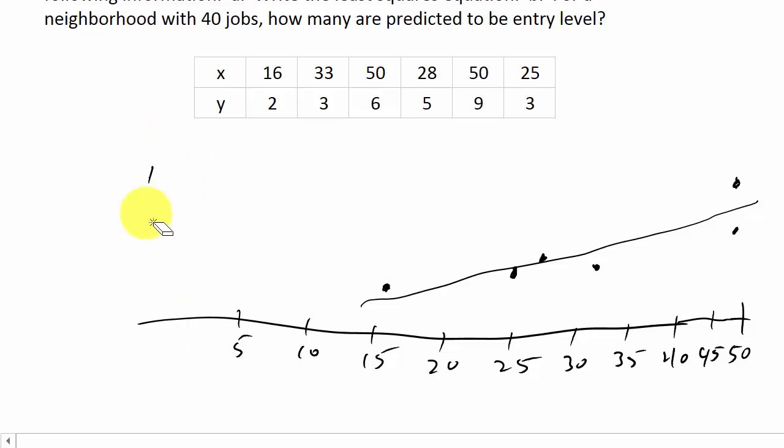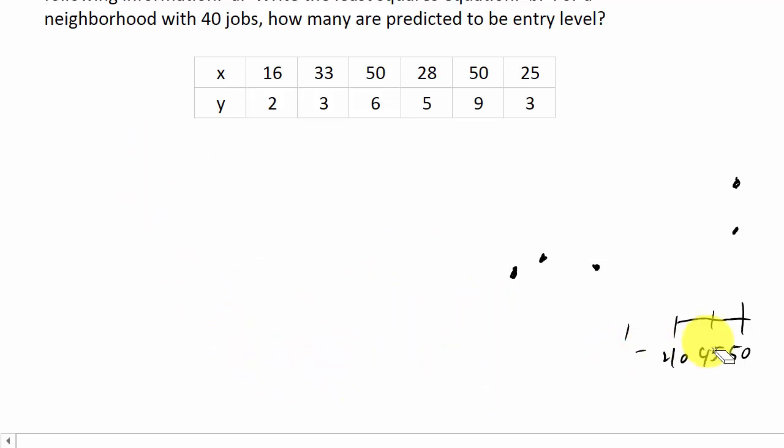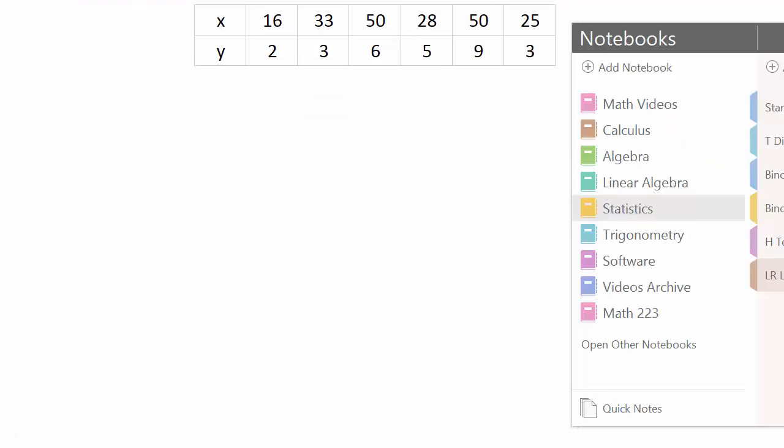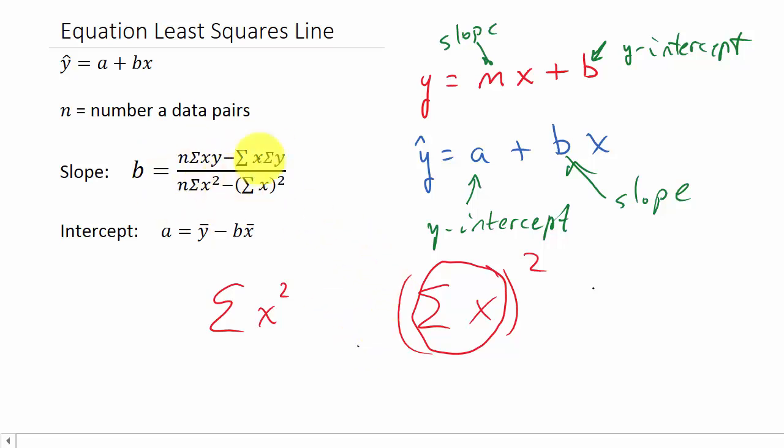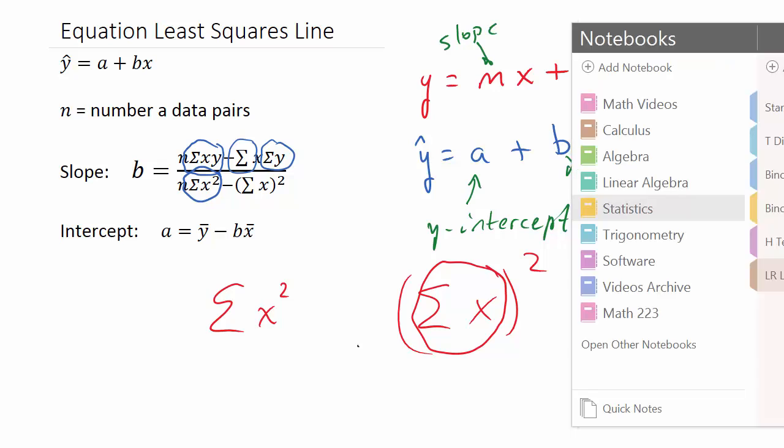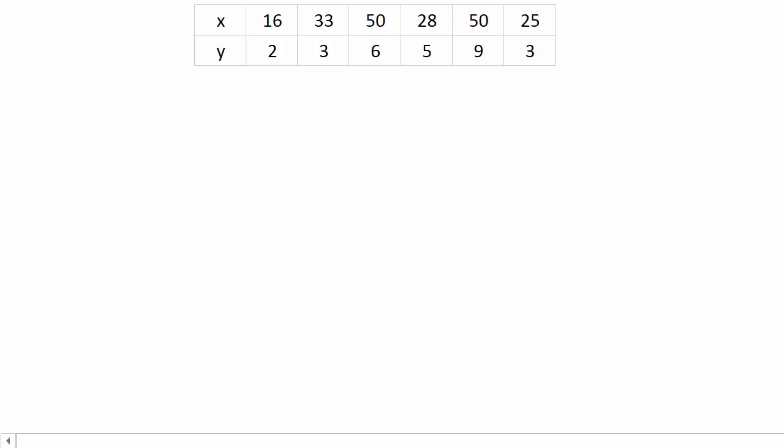If you remember our formula, we need the sum of x times y, the sum of x, the sum of y, the sum of x squared, and then when we find the sum of x we'll square that value also. What I like to do is just make a chart. I've got x, I've got y.